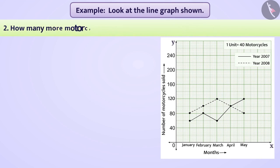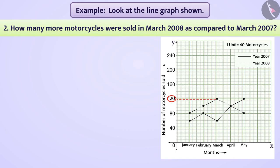How many more motorcycles were sold in March 2008 as compared to March 2007? It is observed from the graph shown that 120 motorcycles were sold in March 2008 and 60 were sold in March 2007. The difference between the two numbers is 120 minus 60 is equal to 60.